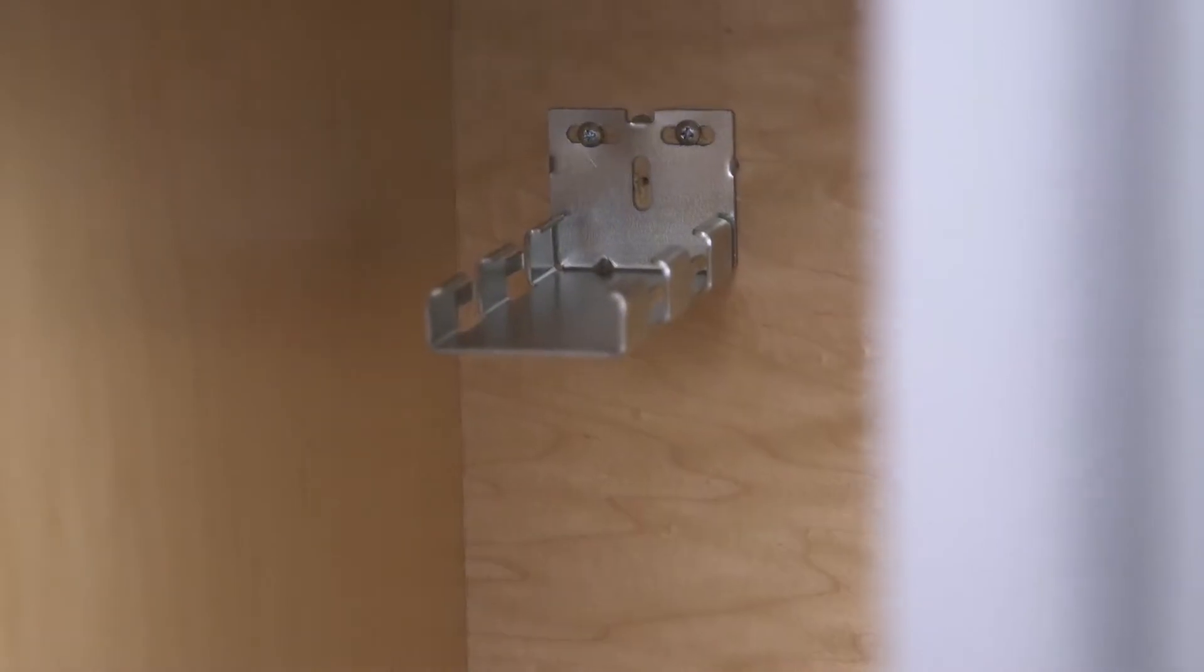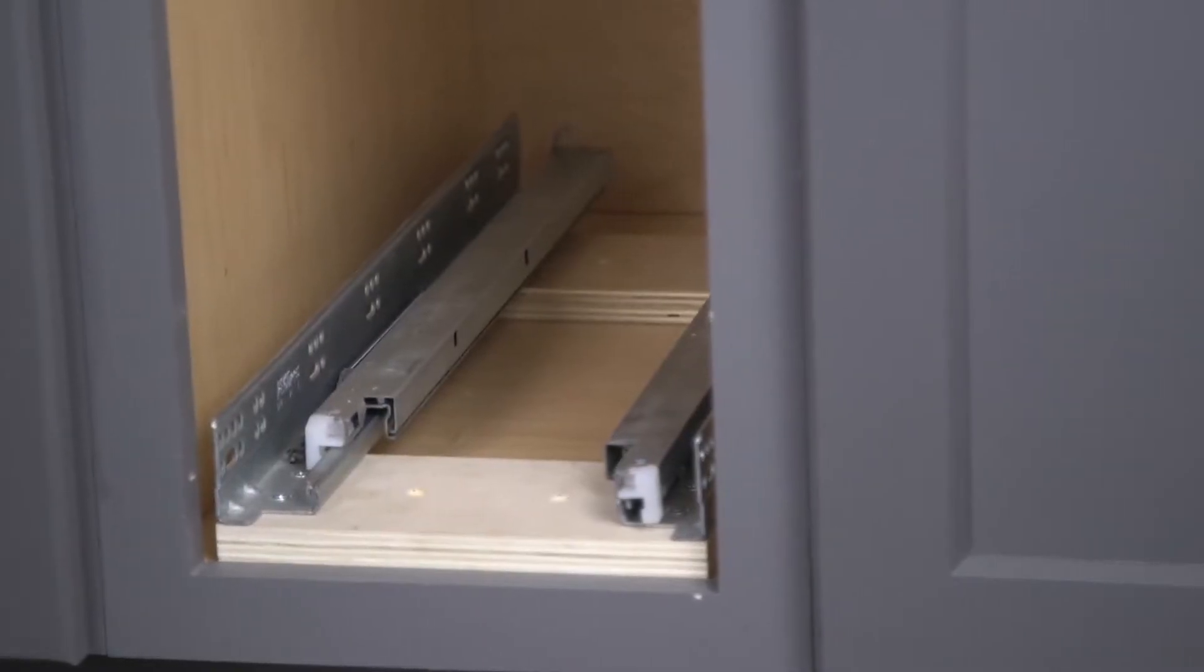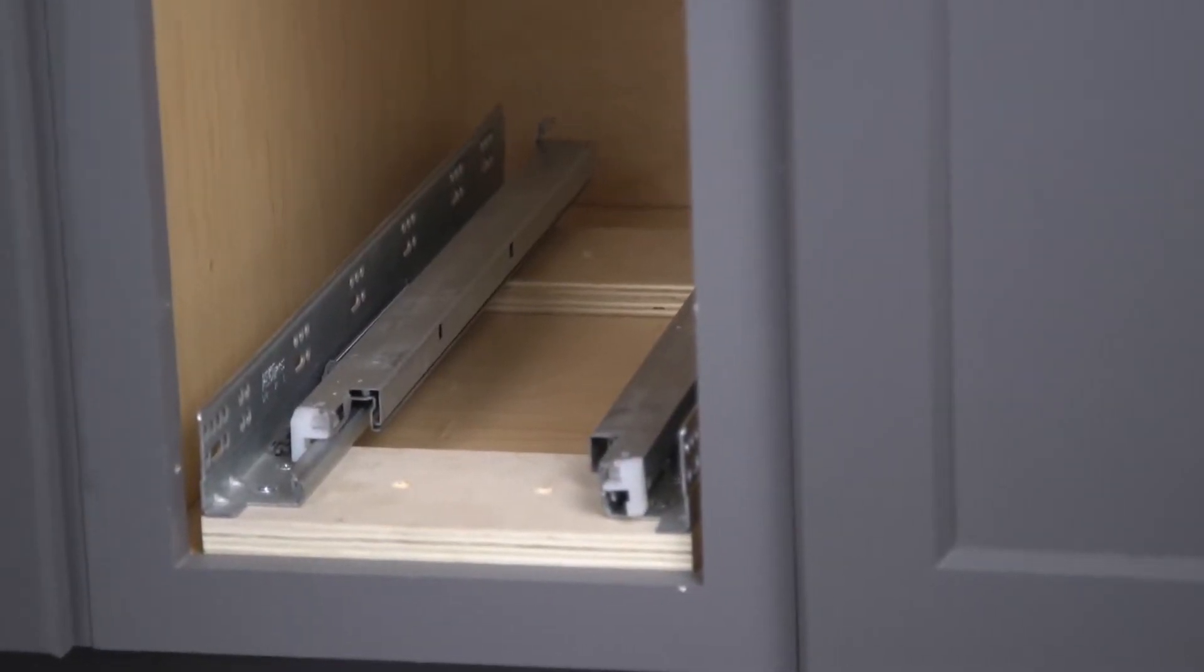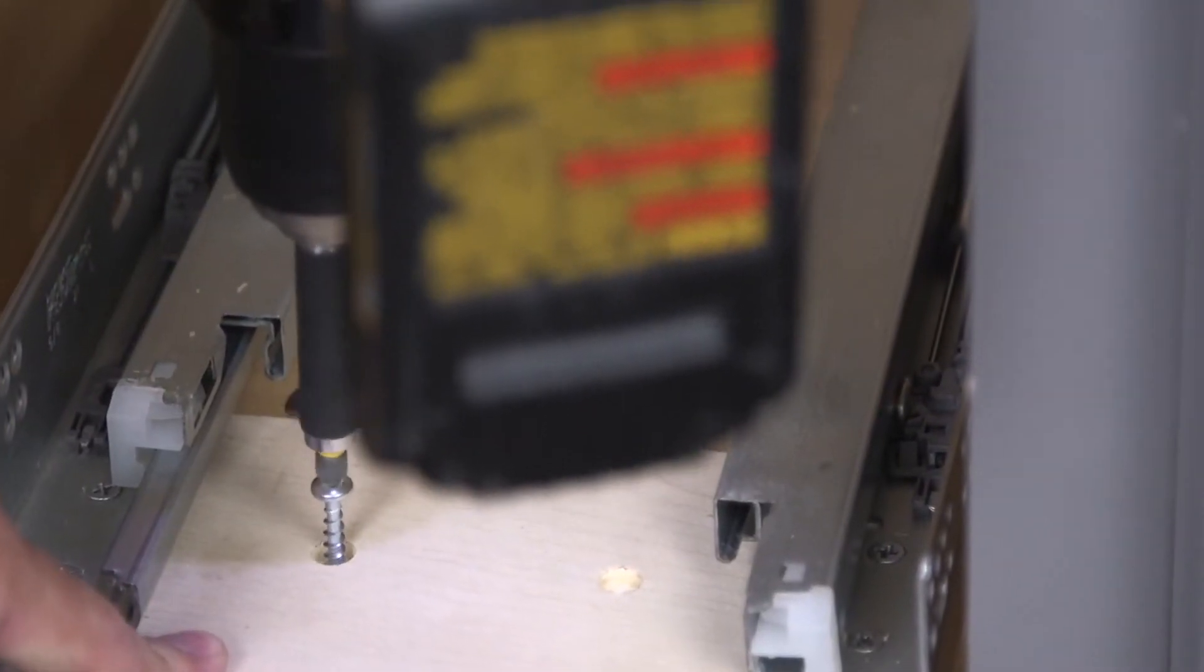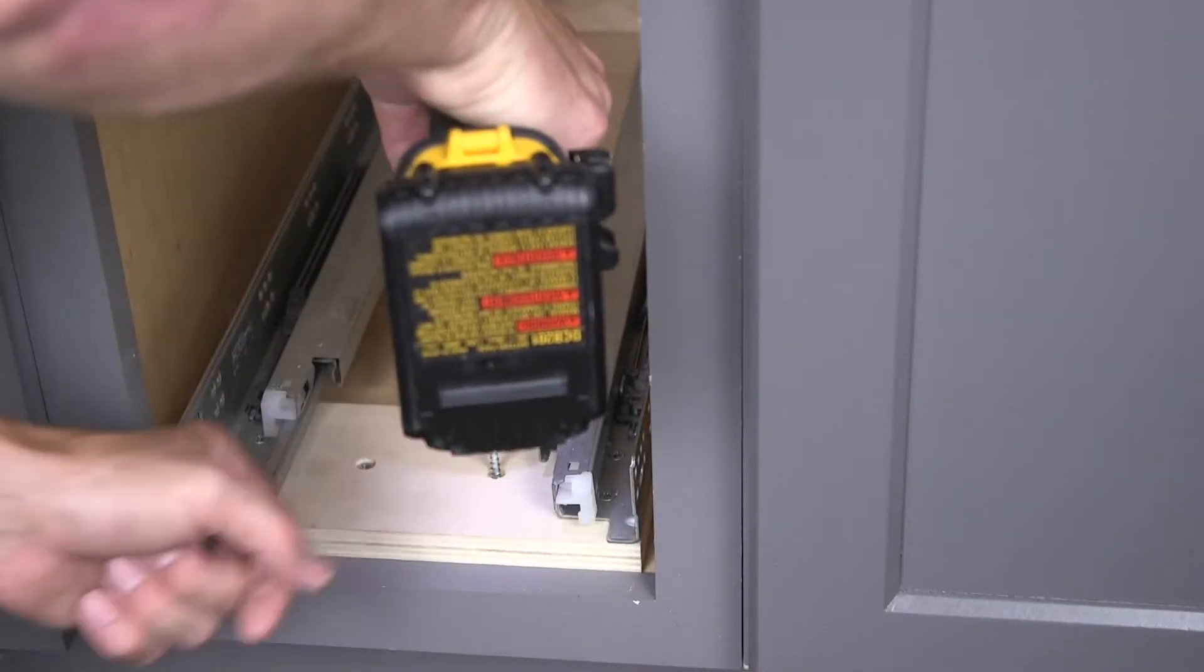Place the base back into the cabinet in the previous location. Install with four number ten by one and a quarter inch pan head wood screws that are provided into the four pre-drilled holes in the plywood runner.